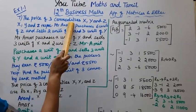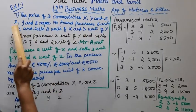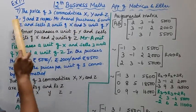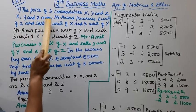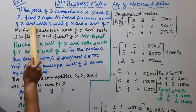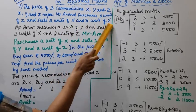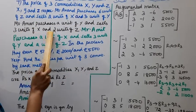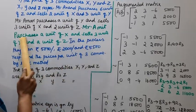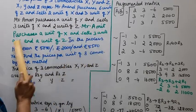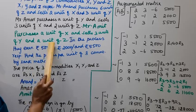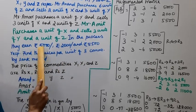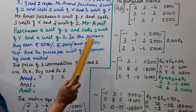The price of 3 commodities X, Y, and Z is Rupees X, Rupees Y, and Rupees Z respectively. Mr. Anand purchases 6 units of Z and sells 2 units of X and 3 units of Y. Mr. Amir purchases 1 unit of Y and sells 3 units of X and 2 units of Z. Mr. Amit purchases 1 unit of X and sells 3 units of Y and 1 unit of Z. In the process, they earn Rupees 5,000, 2,000, and 5,500 respectively.